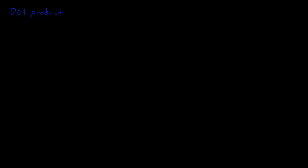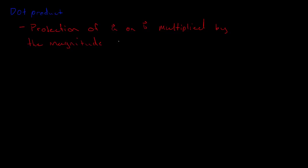So the dot product — what do I want to talk about? The first thing is that when I give you the definition, it's not going to make sense. The definition is: it is the projection of vector A onto vector B, multiplied by the magnitude of vector B. And as I said, this is not going to make a lot of sense because you're going, what the heck is a projection? I know what the magnitude is, but what does this value even represent? How am I going to use this in my games?